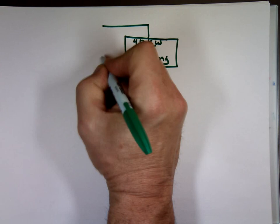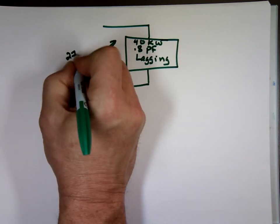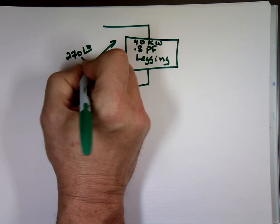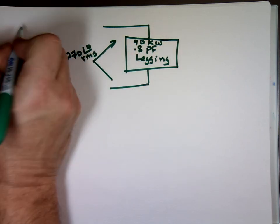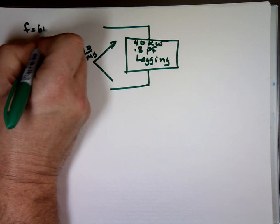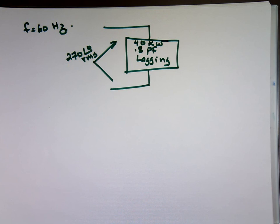This comes from 270 right here, a voltage source of 270 angle zero RMS. We're using frequency equals 60 Hertz. We never used the frequency in the previous one. Here, we probably have to use it.